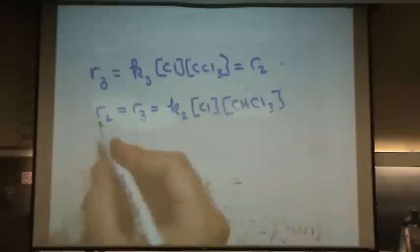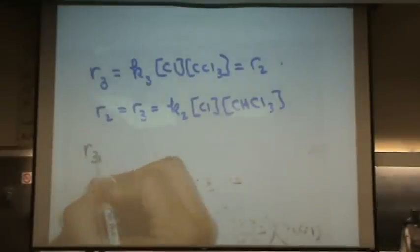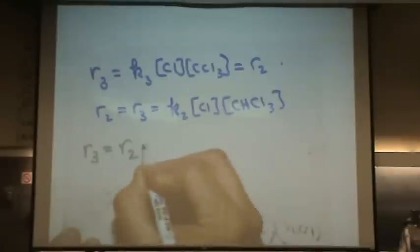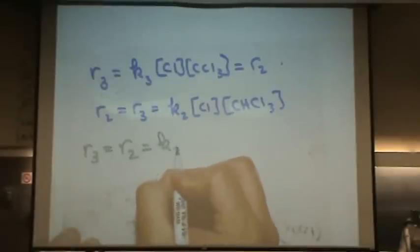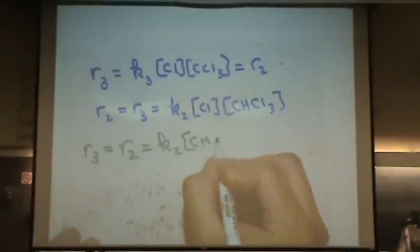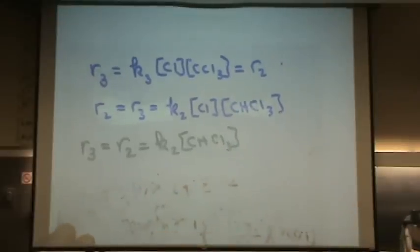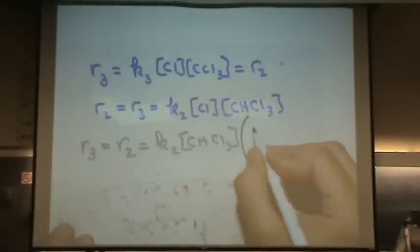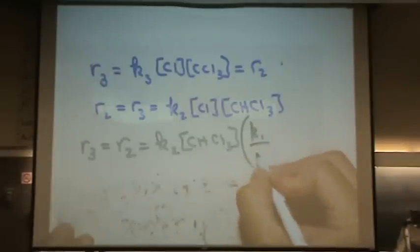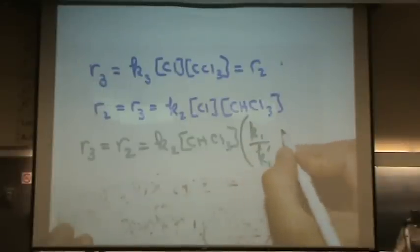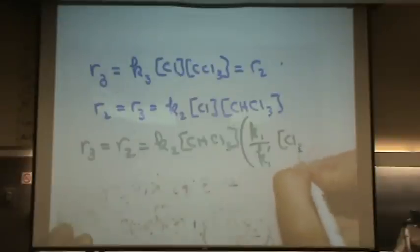I'll do it in a different color so you can see that. Rate 3, which is my answer, happens to equal rate 2, which is K2 CHCl3 times the expression for Cl, which is what on the previous page. K1 over K1 prime, Cl2 to the one and a half power.